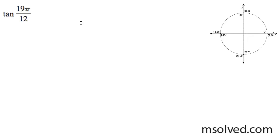Let's find the exact value of tangent of 19π over 12. What we can do here is I know 19π over 12 is just 15 degrees more than 270 degrees.